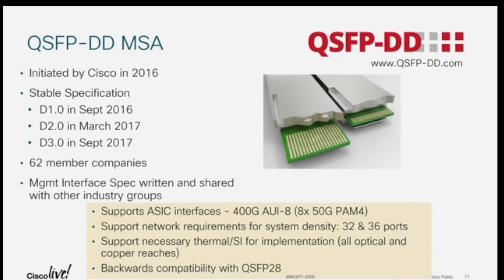I'm going to spend more time talking about the Double Density, partly because I'm biased, but partly because I think that's where the industry is going. 400 GigE is based on eight lanes of 50 gig. Everything before that was always based on four lanes, so all our form factors were optimized for four lanes. For the Double Density, we make the connector a little bit longer and put an extra row of contacts on it — we just double it. We've got a lot of support — 60 companies in the industry are working on this. It supports the same density: 32 ports of 400 gig QSFP-DD just as we had 32 ports of 100 gig QSFP.